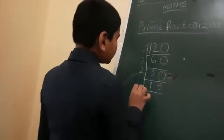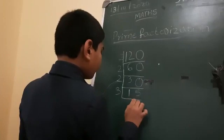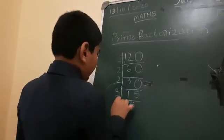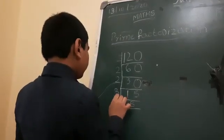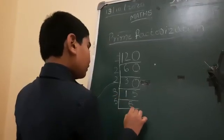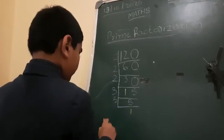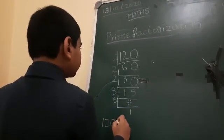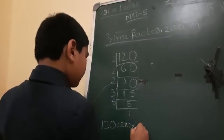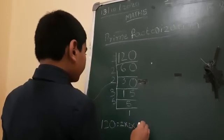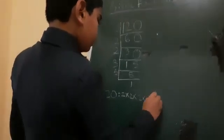And fifteen — in which table will it come? Three tables. Three fives are fifteen. And five — in which table will it come? Five tables. Five ones are five. So one twenty equals two into two into two into two into three into five.